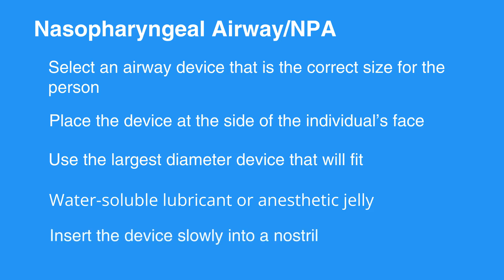Lubricate the airway with a water-soluble lubricant or anesthetic jelly. Insert the device slowly into a nostril, moving straight into the face, not toward the brain. It should feel snug; do not force the device into the nostril. If it feels stuck, remove it and try the other nostril.